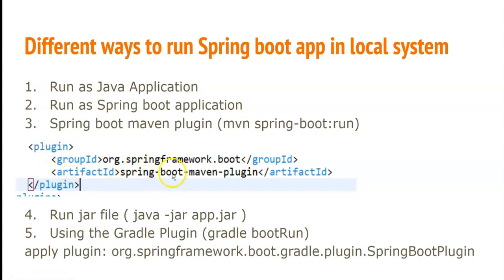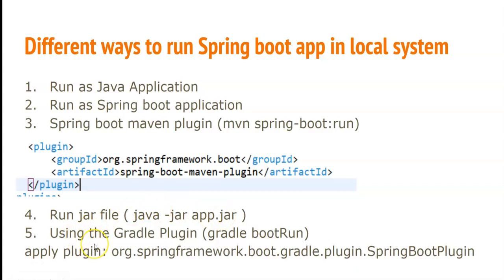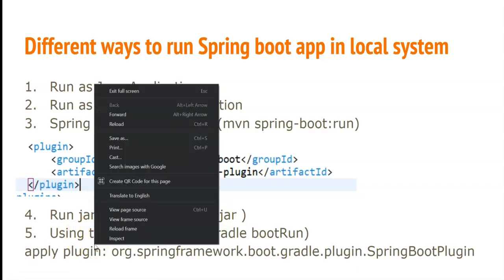To use the Spring Boot Maven plugin, we need to add it to the pom.xml file. After adding this plugin to the pom.xml file, we can run with the command 'mvn spring-boot:run'. The fourth way: we need to build the JAR file, and after building it we can run with the command 'java -jar' followed by the JAR file name.